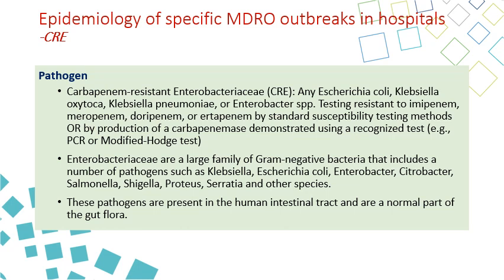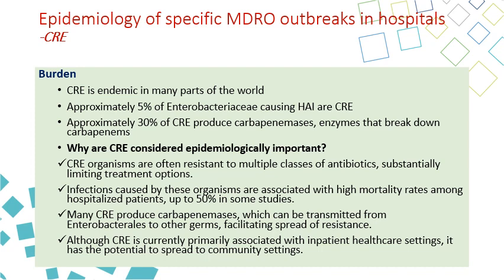Enterobacteriaceae are a large family of gram-negative bacteria including Klebsiella, E. coli, Enterobacter, Citrobacter, Salmonella, Shigella, Proteus, Serratia, and other species. These pathogens are present in the human intestine — that is why they are called enterobacteria — and are a normal part of the gut flora. They are endemic in many parts of the world. Approximately 5% of enterobacteria causing HAI are CRE, and approximately 30% of CRE produce carbapenemase, an enzyme that breaks down the carbapenem, causing resistance.